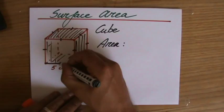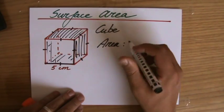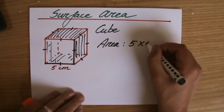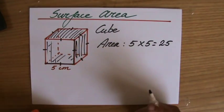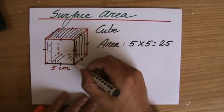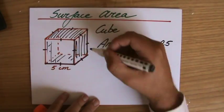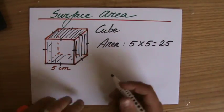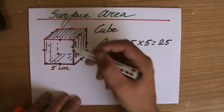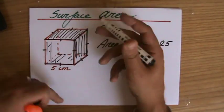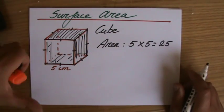That is 5 times 5, which is 25. Now, I could do that six times because here it's also 5 times 5, which is 25. And on the back side, it's also 5 times 5, which is 25. And on top, it's also 25. A cube—they are all the same.